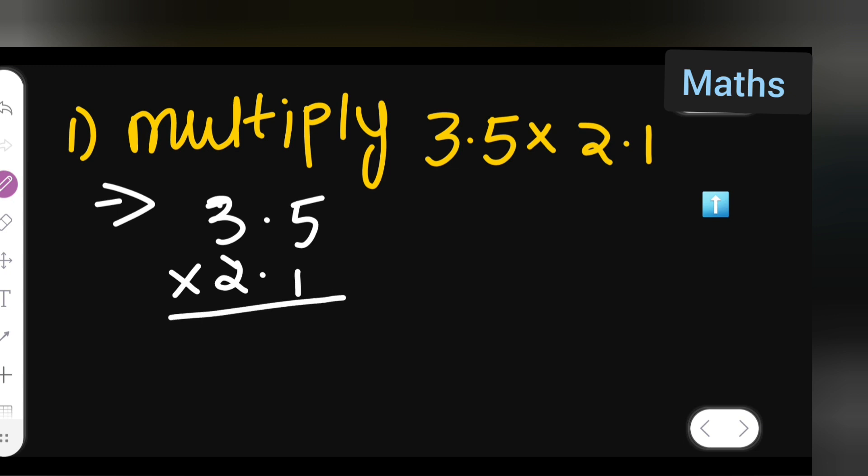So, 1 times 5 is 5, 1 times 3 is 3. Plus 2 times 5 is 10, carry 1. 2 times 3 is 6, plus 7, so 5, 3, 7. 5, 3, 7 is your answer.